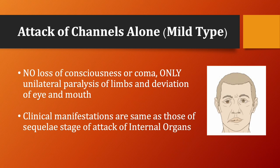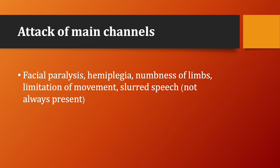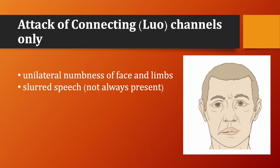When only the channels are attacked, there is no loss of consciousness or coma, but only unilateral paralysis of the limbs and deviation of the eye and mouth. The clinical manifestations of attack of the channels alone are basically the same as those of the sequelae stage of attack of the internal organs. The clinical manifestations vary according to whether the main or luo connecting channels are attacked. Attack of main channels: facial paralysis, hemiplegia, numbness of limbs, limitation of movement, slurred speech (not always present). Attack of luo connecting channels only: unilateral numbness of the face and limbs, and slurred speech (not always present).